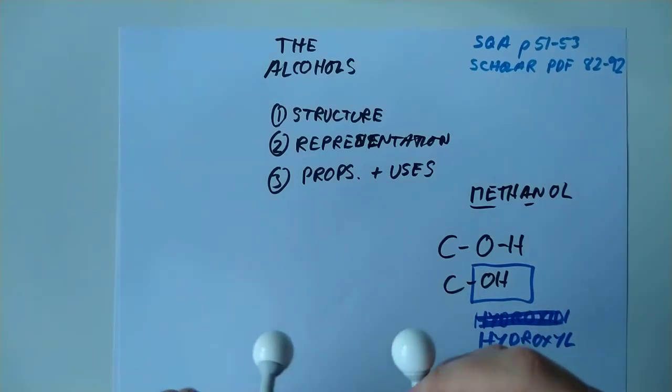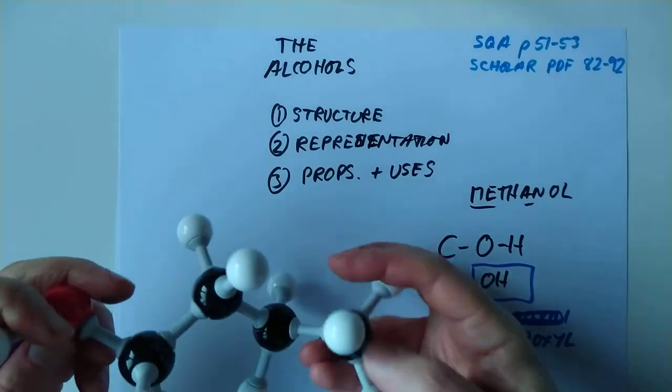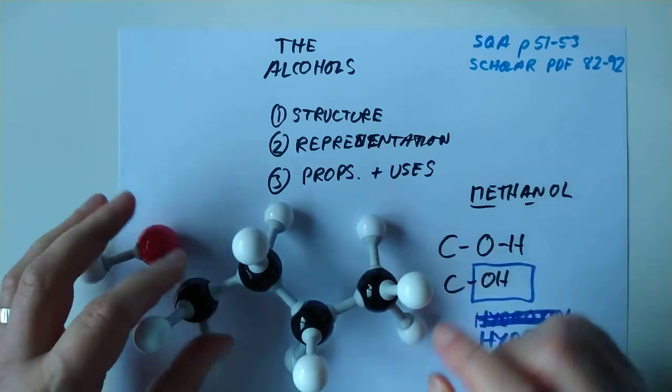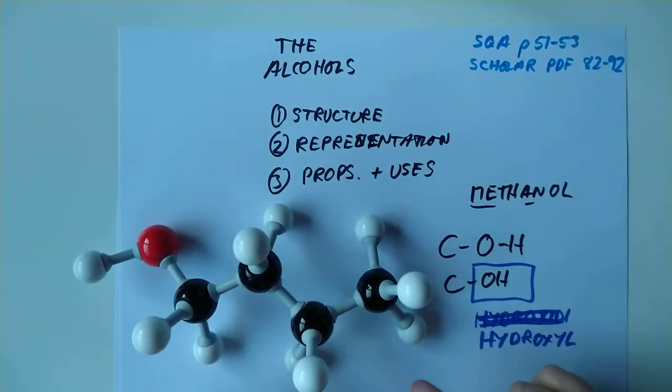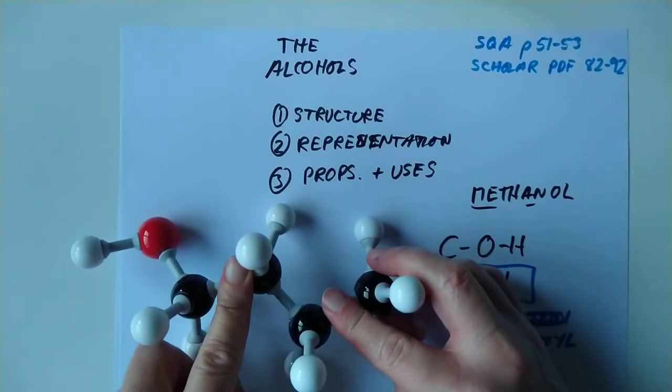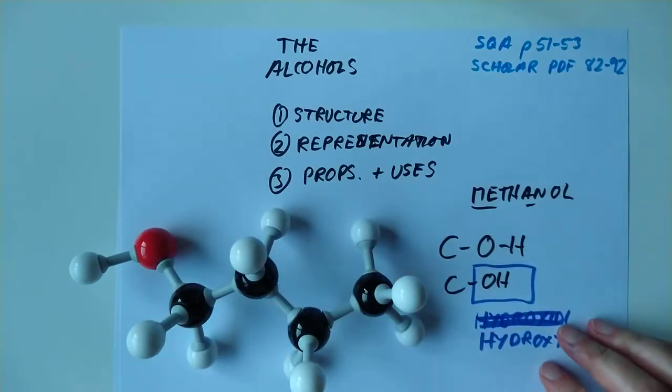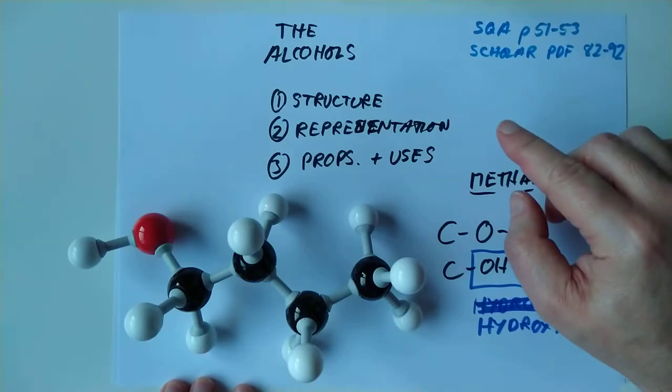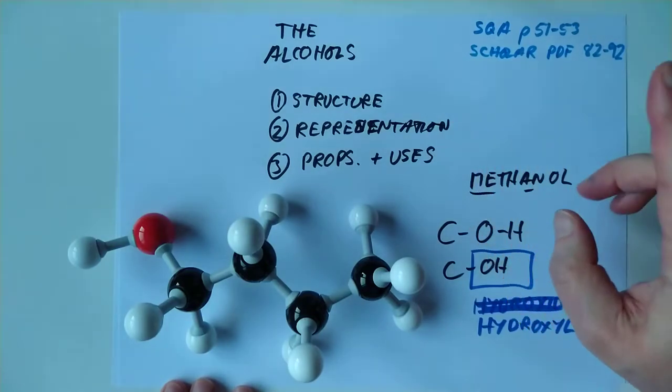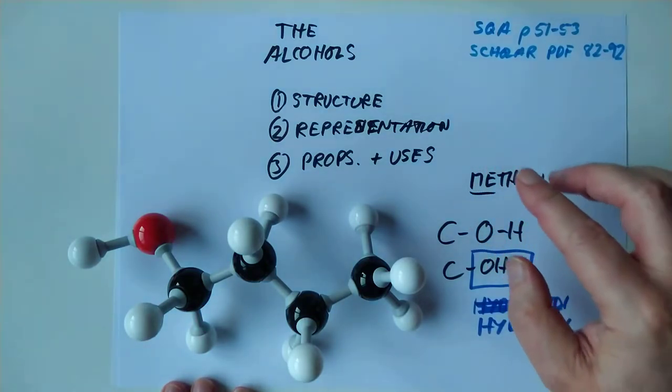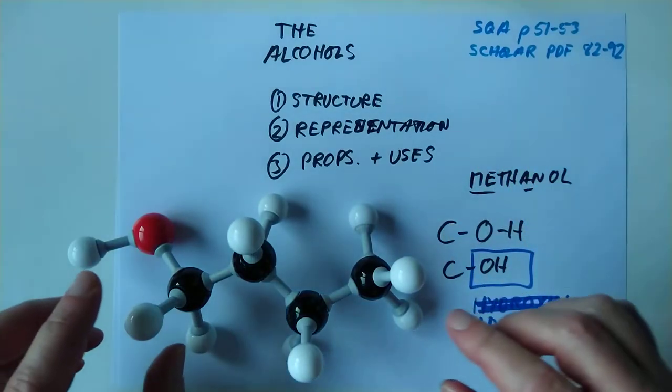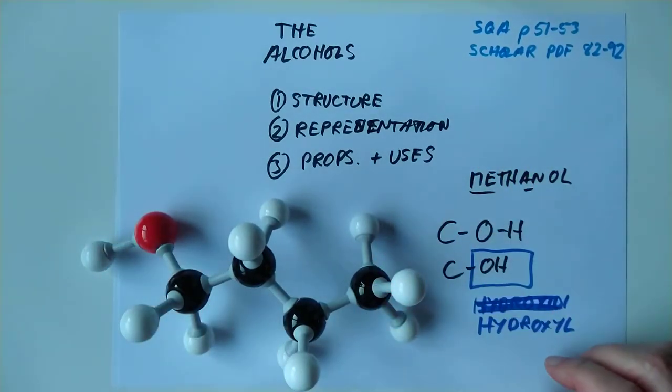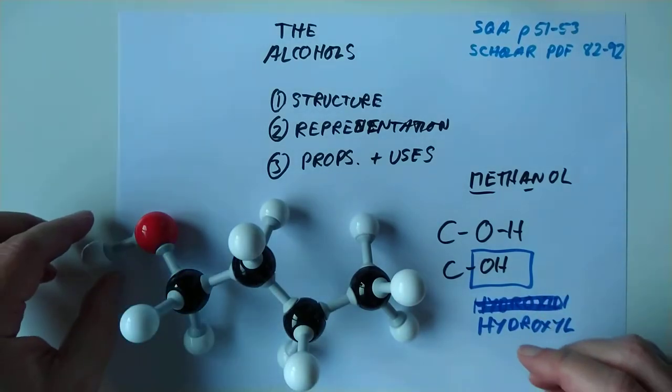Here is a much larger member of the same homologous series. This one has got 1, 2, 3, 4 carbons in it. You might want to pause the video and see if you could name this molecule for me. I'm hoping you came up with butanol. 1, 2, 3, 4 is but and it's got hydroxyl, so it is butanol.